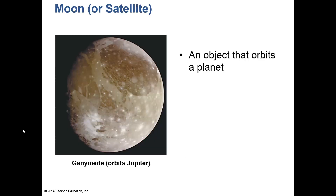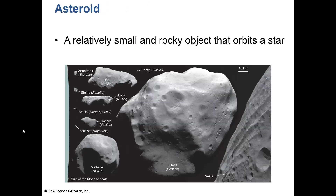We also have satellites, also known as moons — natural objects that orbit a planet. Here's a picture of Ganymede, which orbits Jupiter and is one of the large Galilean moons.